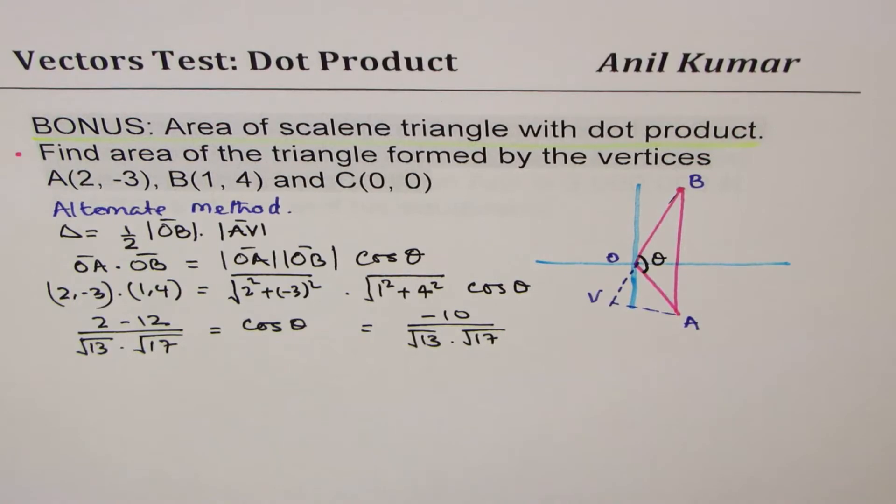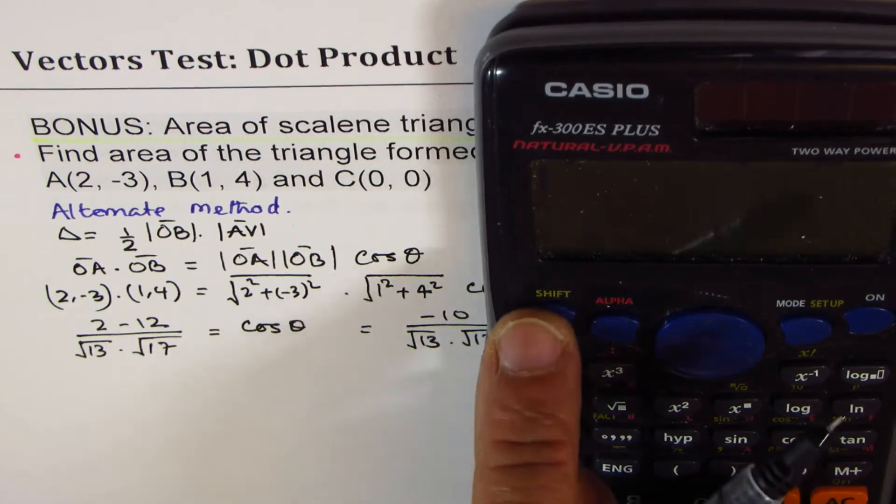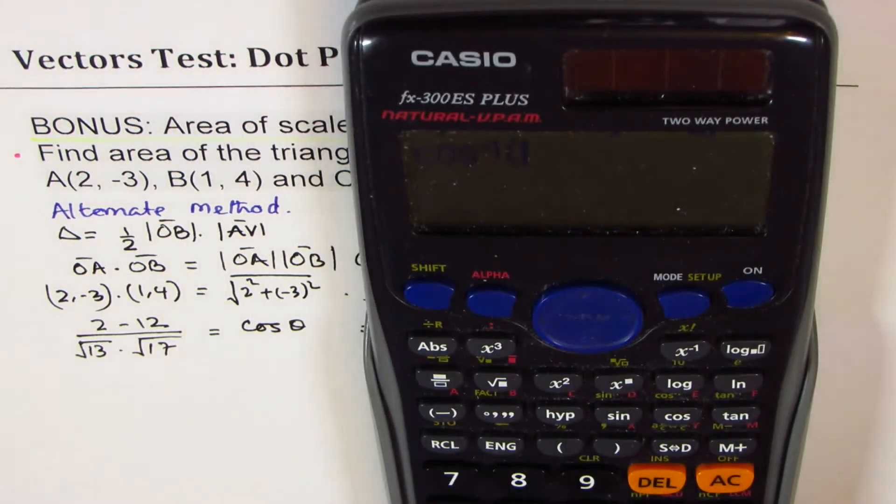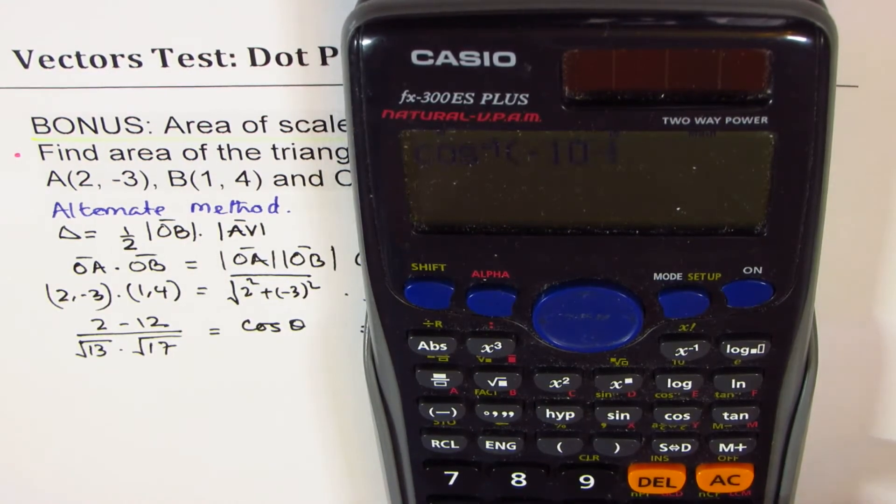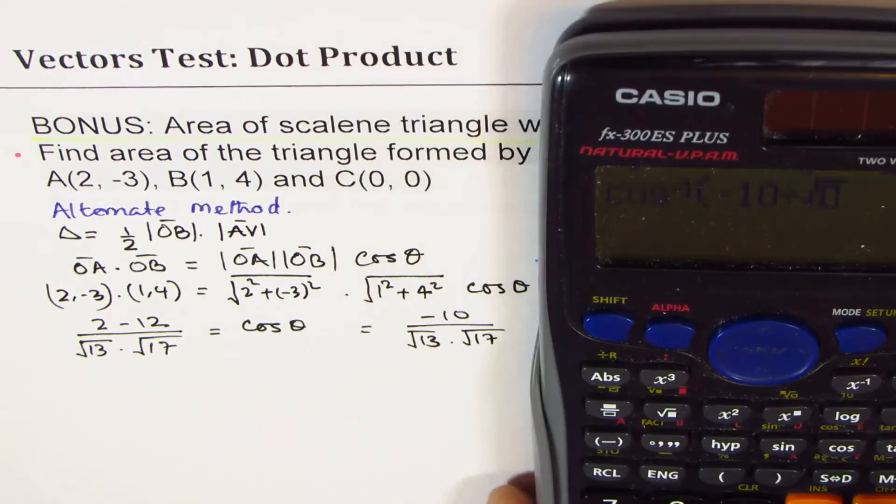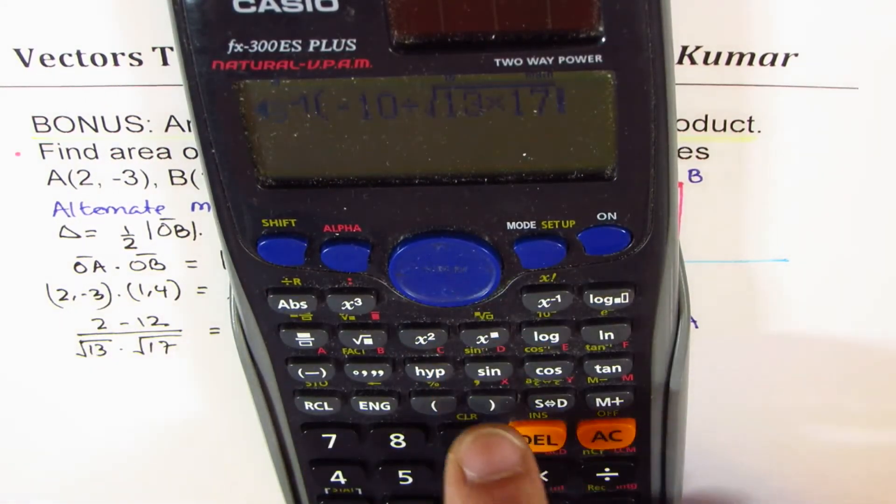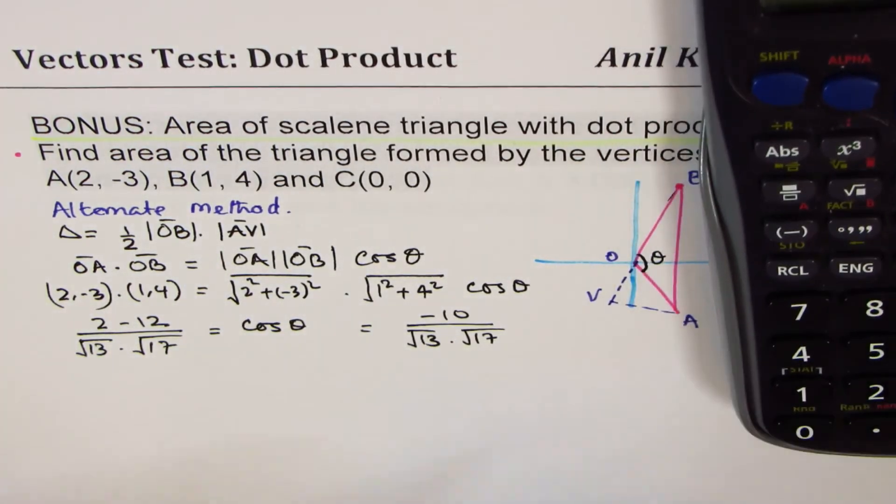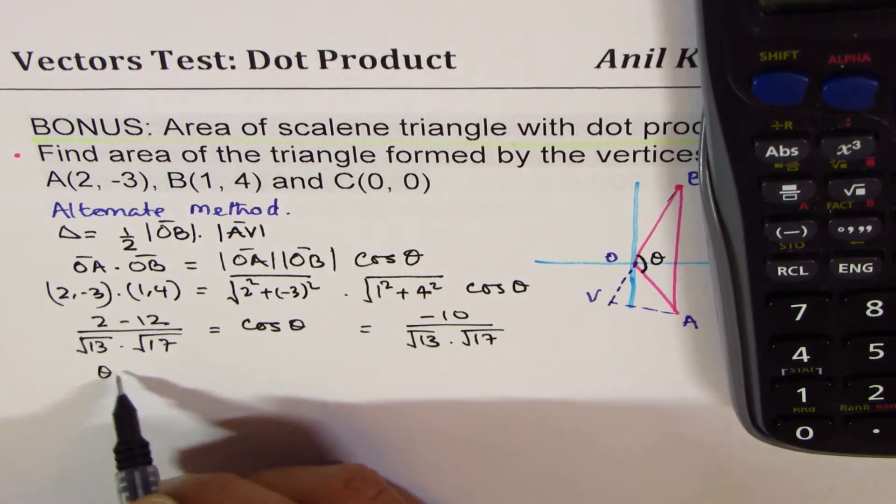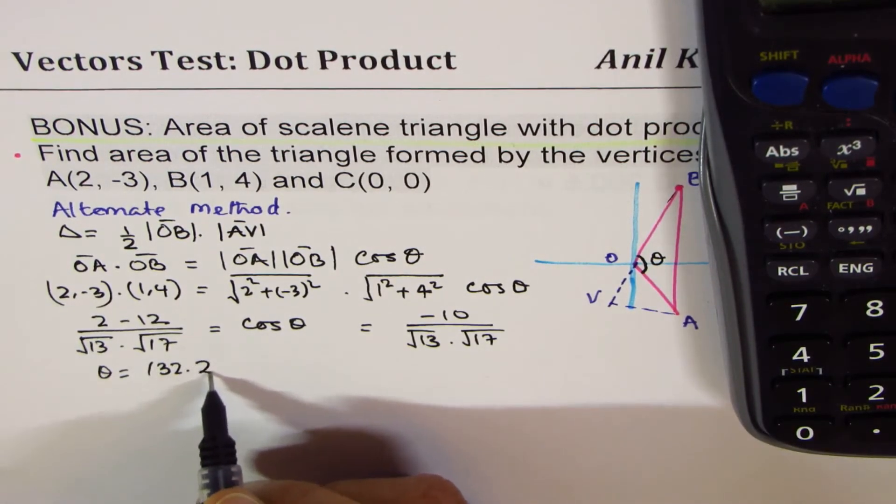From here we can find what angle θ is. So θ is cos inverse of -10 divided by √(13 × 17). That gives you θ equals 132.27 degrees.